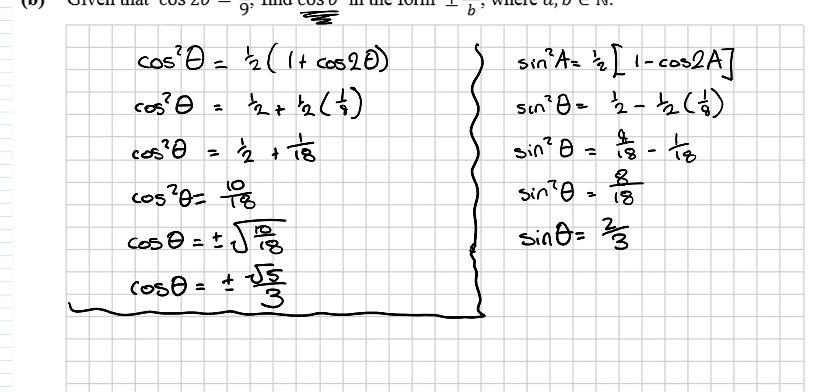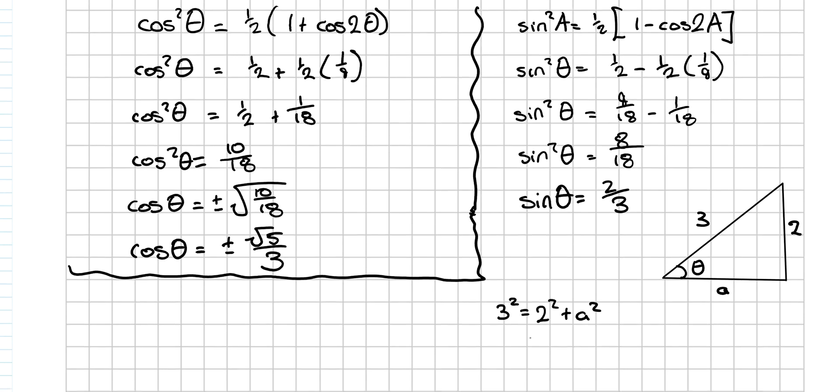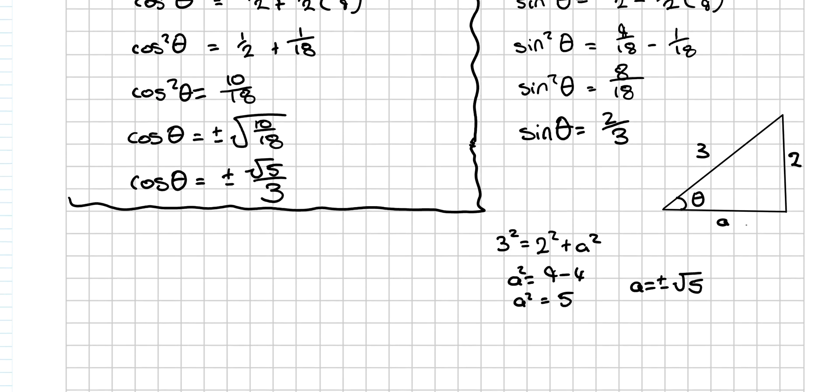So I've found sine theta, draw out your little right angle triangle, put in your theta, 3, 2, we need to use Pythagoras' theorem. 3 squared is equal to 2 squared plus a squared, I'm just going to call this a. A squared is equal to 9 minus 4, is equal to 5, a is equal to the square root of 5, but remember, when I introduce the square root, I should take the plus or minus version of it. So this is plus or minus root 5, so you get two answers then, when you go cos theta is equal to adjacent over hypotenuse, plus or minus square root of 5 over 3.